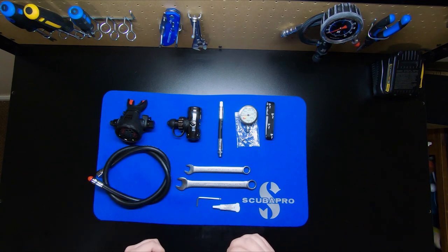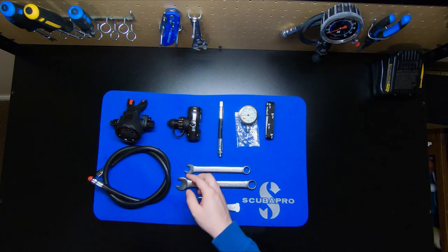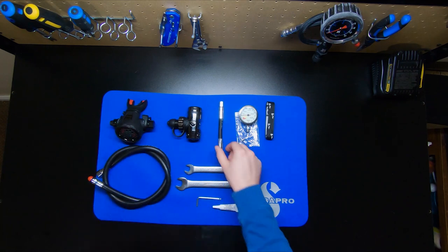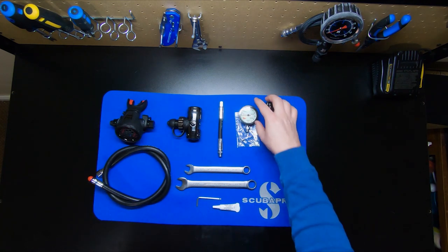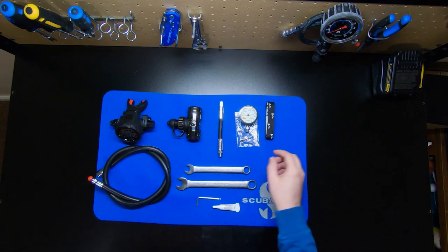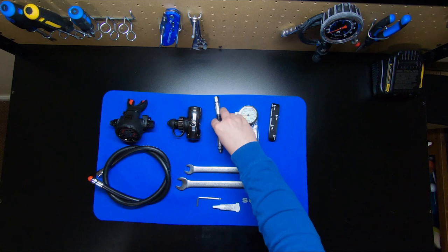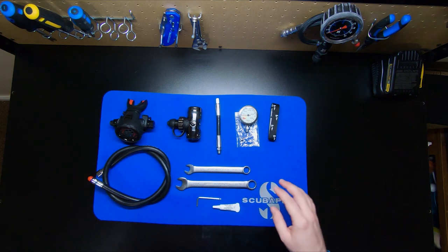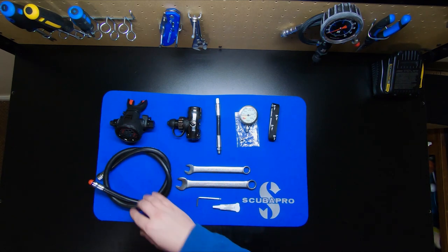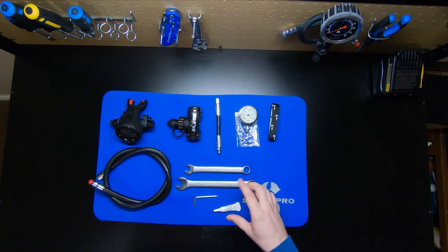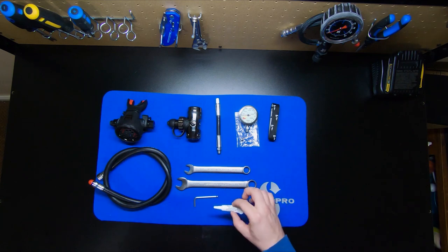So to assemble your stage regulator, first you're going to need a first stage, a second stage, a six inch high pressure hose, a small SPG with the spindle, a hose retainer of some sort to help secure the hose, and a 40 inch low pressure hose. Tool-wise, you're going to need a 9/16th wrench, an 11/16th wrench, a small to medium size Allen key, and also a little bit of O2 compatible grease.